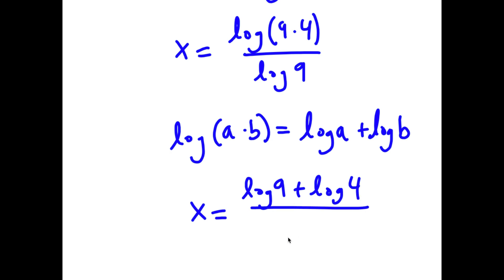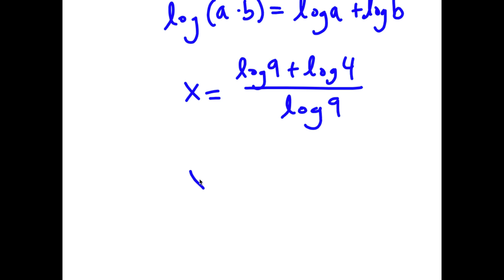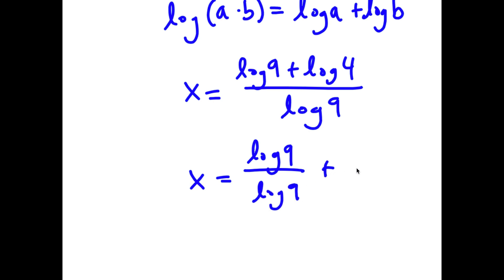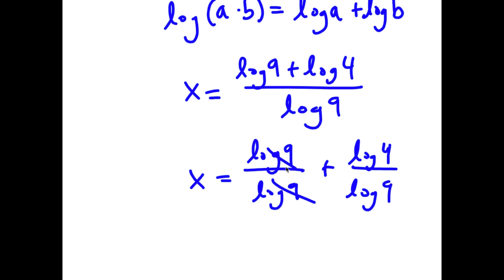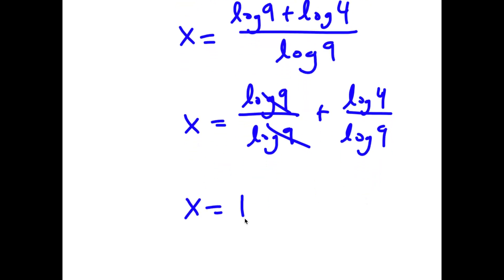Now I have this over log of 9. This is equal to log 9 over log 9 plus log 4 over log 9. These two cancel out, and now I have x is equal to 1 plus log 4 over log 9.